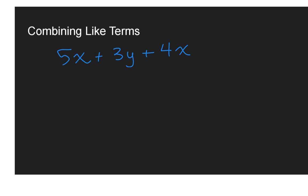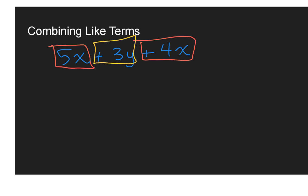Now we're going to try to combine like terms on a slightly more complicated expression. The first one we're going to look at is five x plus three y plus four x. One thing to know when combining like terms: like terms have to have the same variable. So I have five x and plus four x — those are both x's, so x's can combine together. And then I have plus three y, and I don't have any more y's, so the y is kind of by itself — just the three y and that's it.